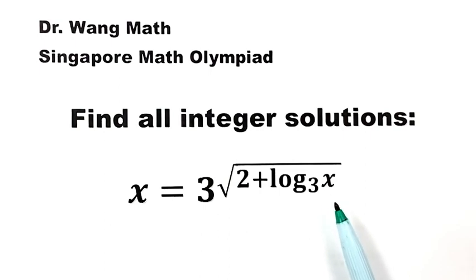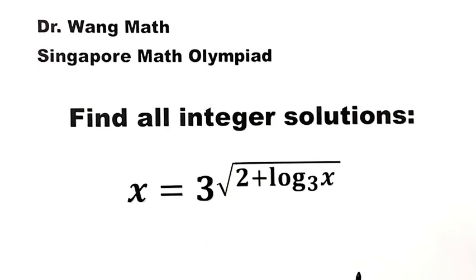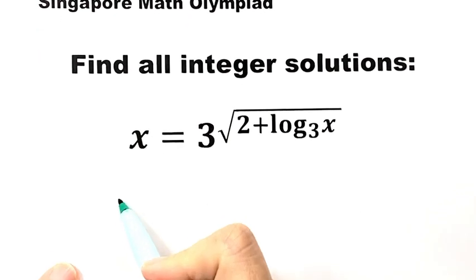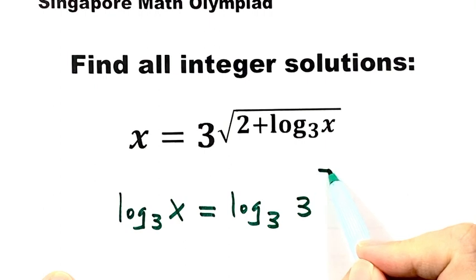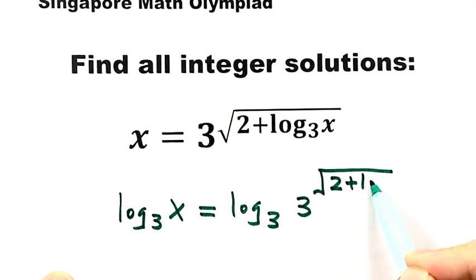How to solve this equation? Since the right hand side has an exponential term with base 3, the first step is to take log with base 3 on both sides of the equation. This transforms our equation to log base 3 of x equals log base 3 of 3 to the power of square root 2 plus log base 3 of x.